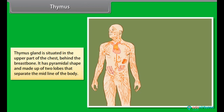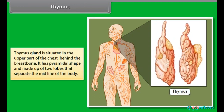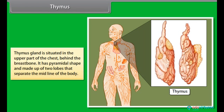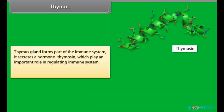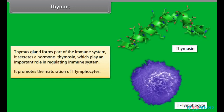The thymus gland is situated in the upper part of the chest, behind the breast bone. It has a pyramidal shape and is made up of two lobes that meet at the midline of the body. The thymus gland forms part of the immune system and secretes a hormone called thymocin, which plays an important role in regulating the immune system and promotes the maturation of T-lymphocytes.